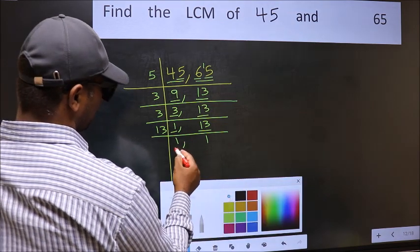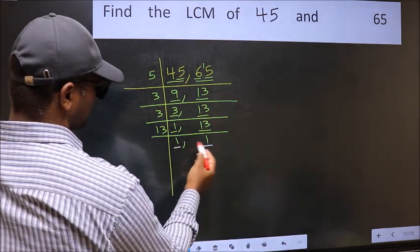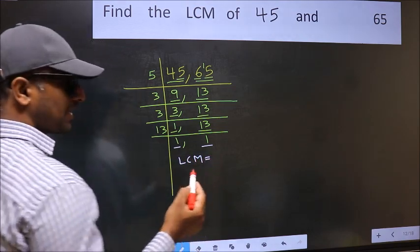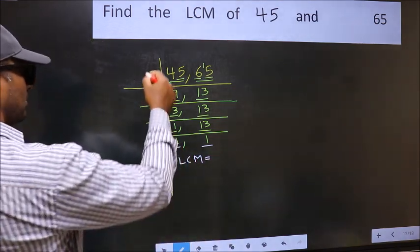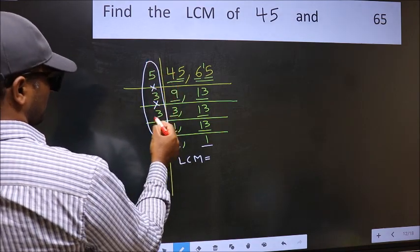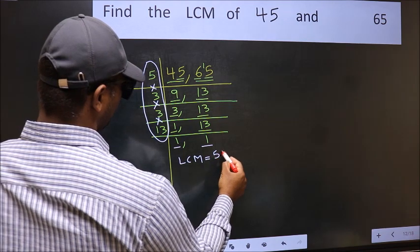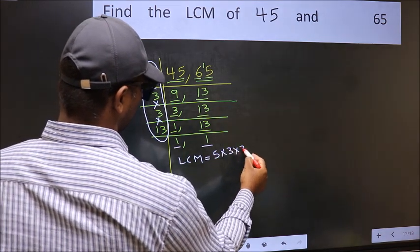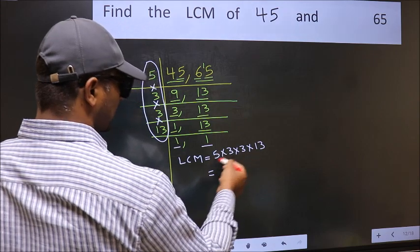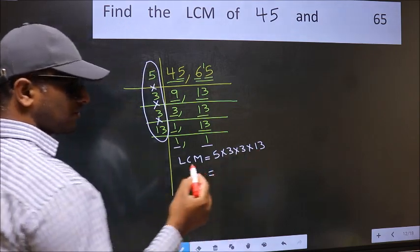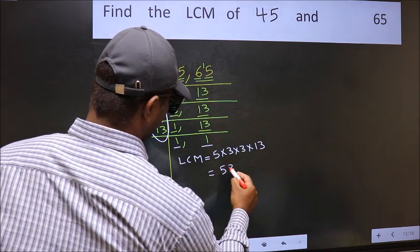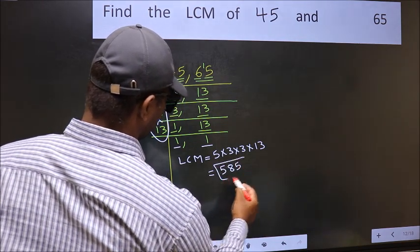So we got 1 in both the places. So our LCM is, LCM is the product of these numbers, that is 5 into 3, into 3, into 13. When we multiply these numbers, we get 585 is our LCM.